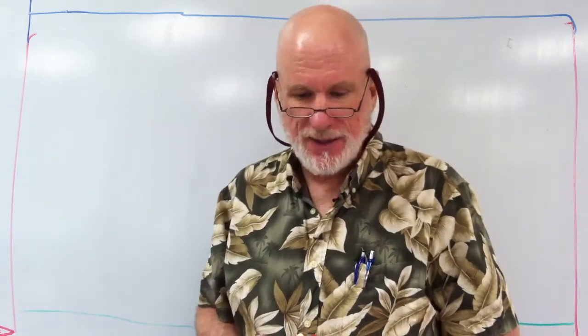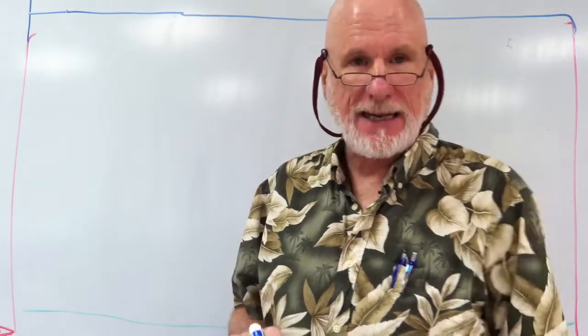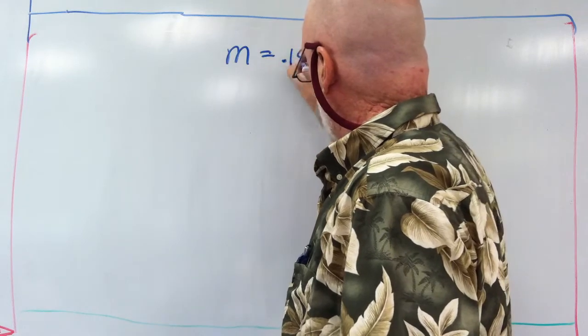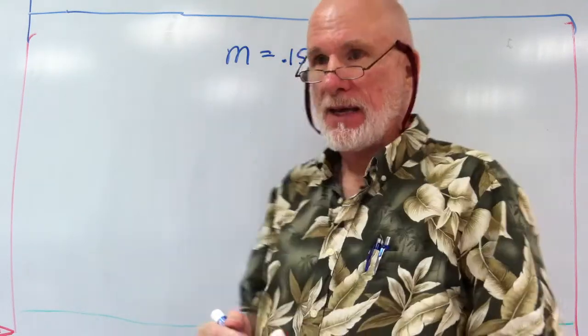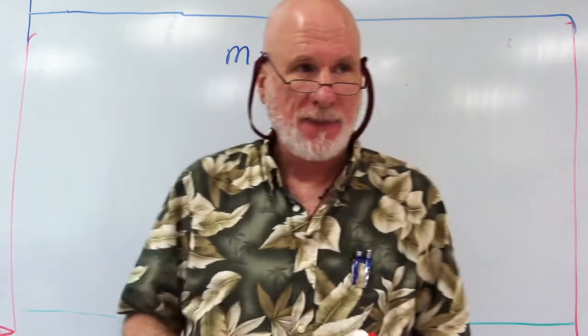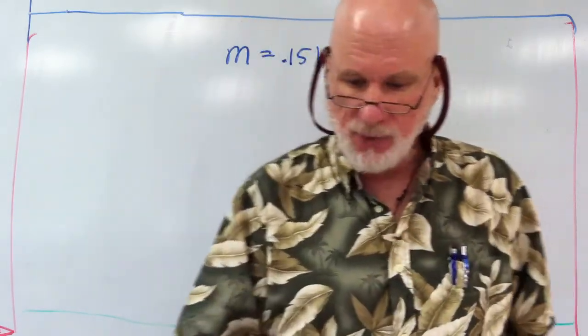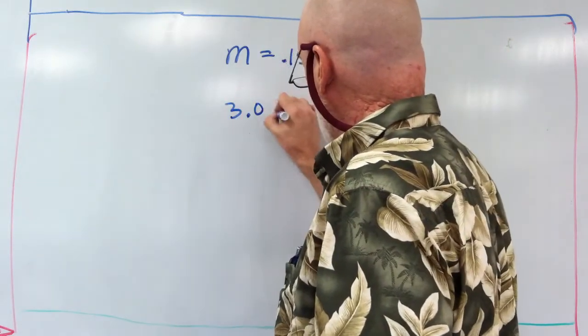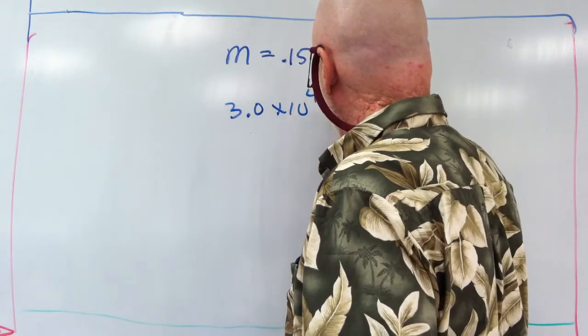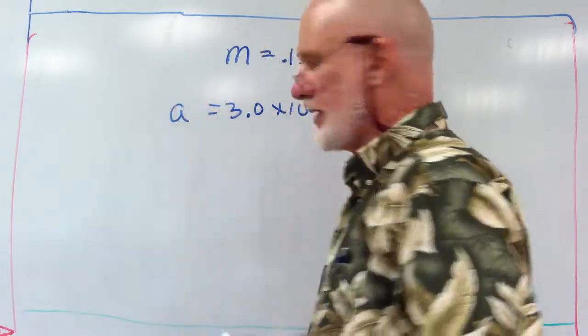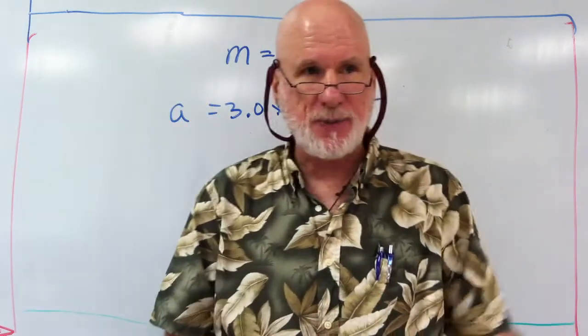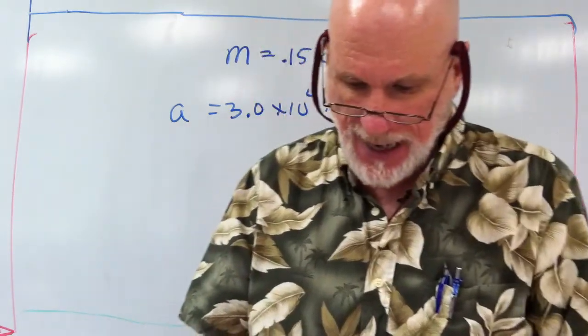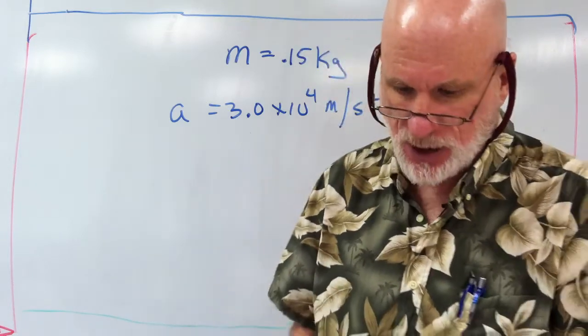And the first problem I want to do is he swings and he hits a baseball. Now, the baseball has a mass equal to 0.15 kilograms. Now, when he swings, he's going to hit the ball. And the ball will accelerate 3.0 times 10 to the 4th meters per second squared. That's going to be the acceleration of the baseball. So the baseball is going to come in from the pitcher. He's going to swing and accelerate that at 30,000 meters per second squared.